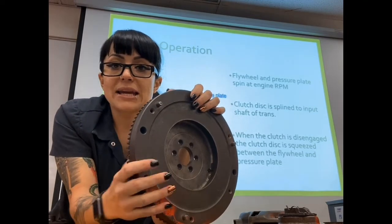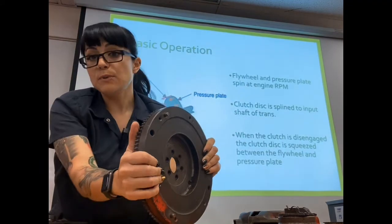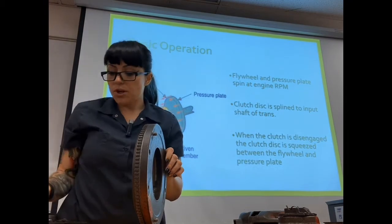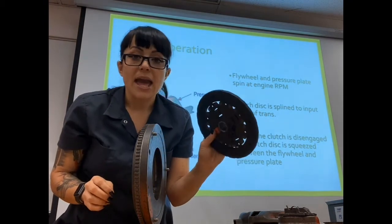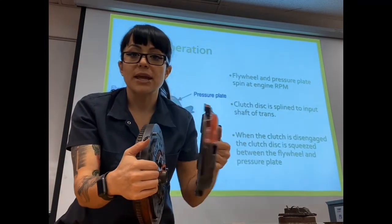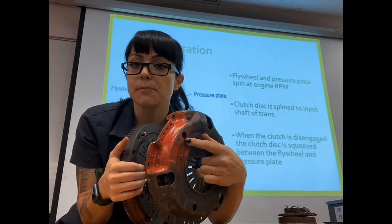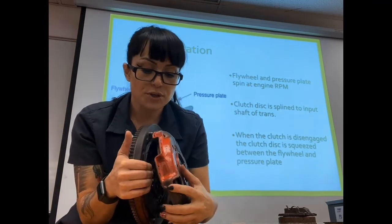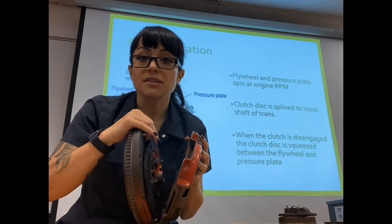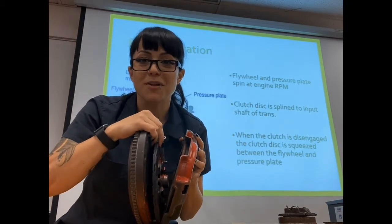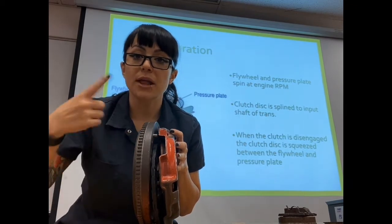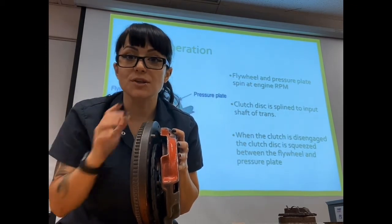While the flywheel is spinning at engine speed, your transmission is not going to be spinning at all. What we're going to do is have a clutch plate go onto my flywheel, and I have a pressure plate here. This pressure plate is bolted directly onto my flywheel, which means it's going to be spinning directly with my flywheel. The clutch itself is not spinning with my flywheel and pressure plate.